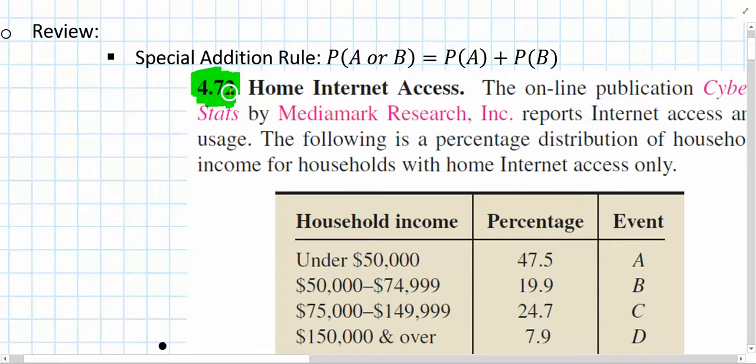So this problem, number 4.72, of course, is in Chapter 4, and it's exercise number 72. If you remember, the exercise numbers continue from section to section, so I think number 72 actually falls in Section 2 or maybe Section 3, so you'll have to find it there in your electronic copy of the textbook. But before I actually begin this particular problem, I'd like to review the special addition rule for probabilities.